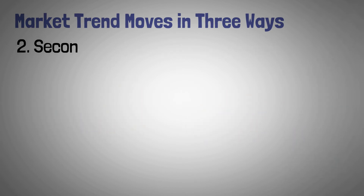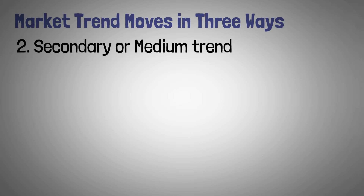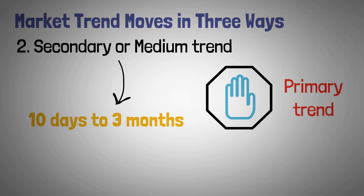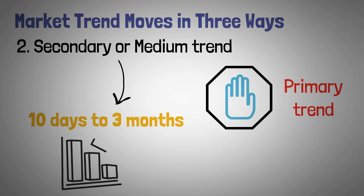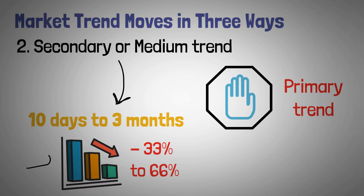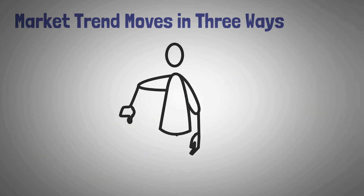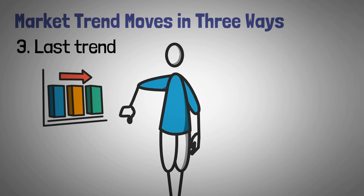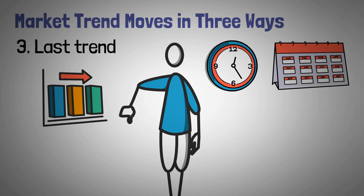After that, we have a secondary or medium trend that runs counter to the primary trend. It lasts from 10 days to 3 months, and it loses 33% to 66% of the value gained in the primary trend in foreseen circumstances. The last trend is insignificant as there is minor movement in the process. It lasts from hours to months and is considered a short swing.